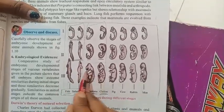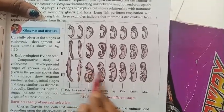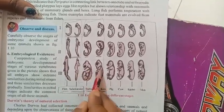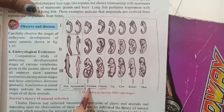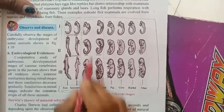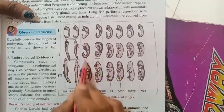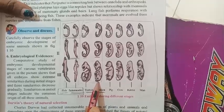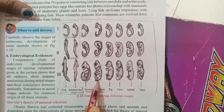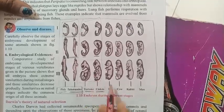Tortoise and chicken embryos are so similar to each other — this means we all have a common origin.